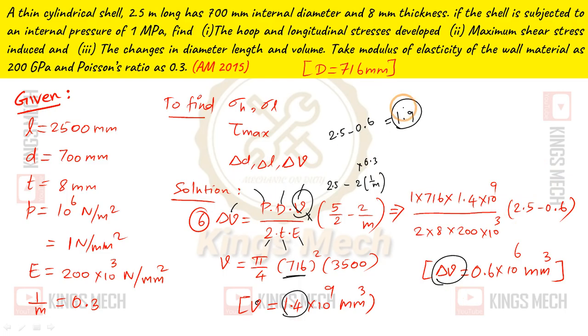For volume, the change 2.5 minus 0.6, we get 1.9. Multiply for finding the value: volume is pi by 4 into capital D square into L. We will get the value of pi by 4 into 1.4 into 10 power 9 millimeter cube. In the value substitute, we get delta V. Delta V formula is pi by 4 into capital D square minus d square.